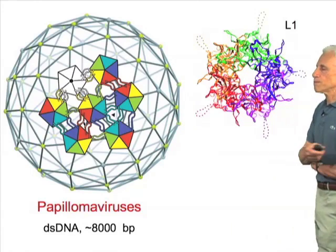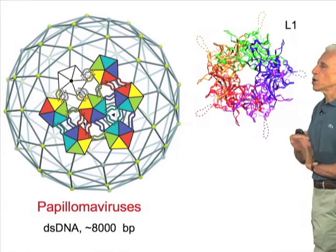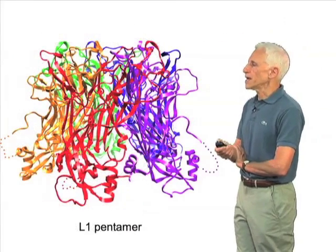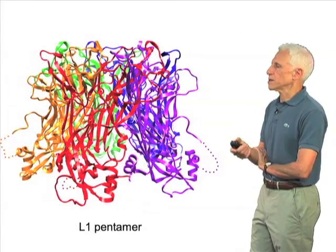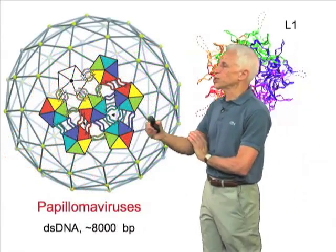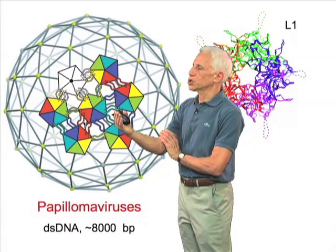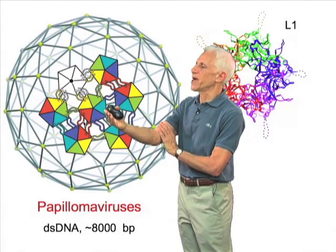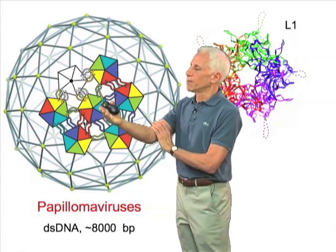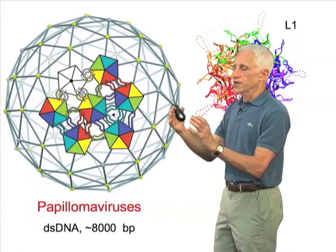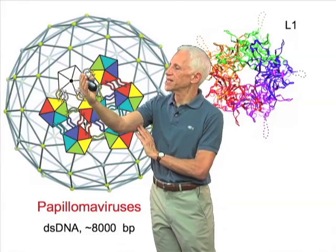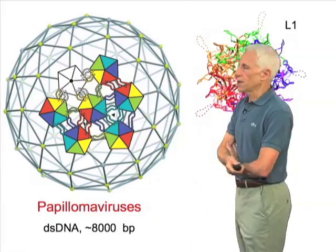Here, the pentameric assembly of the protein L1 that forms this structure is represented, and as you see, there are loops coming out of it — shown with dotted lines here — that form the interactions between the pentamers. And of course, since this is a fivefold peg in a sixfold hole, its arms have to be directed in different ways. But the pentamer itself is a rigid, fivefold symmetric object, just like its chemically identical mate here on a fivefold position.